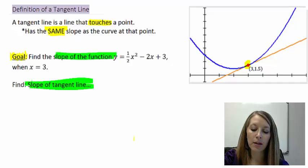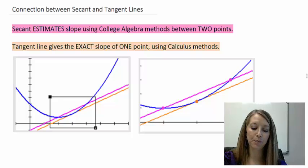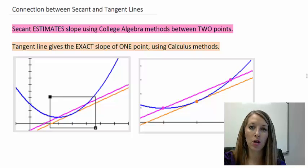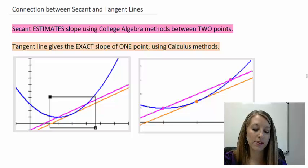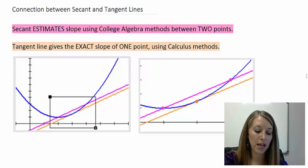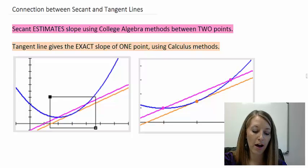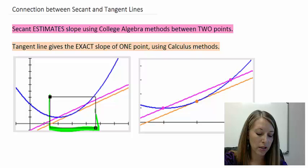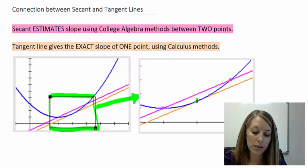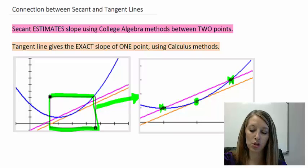Reviewing: the secant line estimates the slope using the college algebra slope formula between two points, while the tangent line gives us the exact slope at one point using the calculus method. I've drawn both lines on the same graph and zoomed in. We can see I want the slope at this point, but I use the estimation of the slope by using those two nearby points.